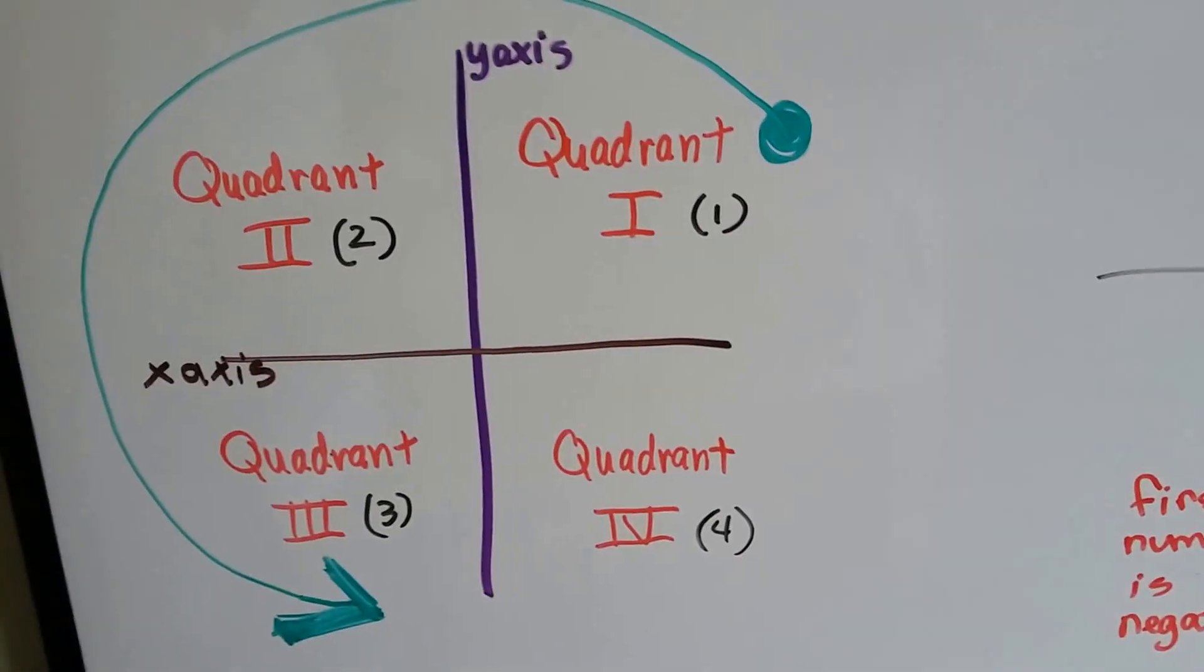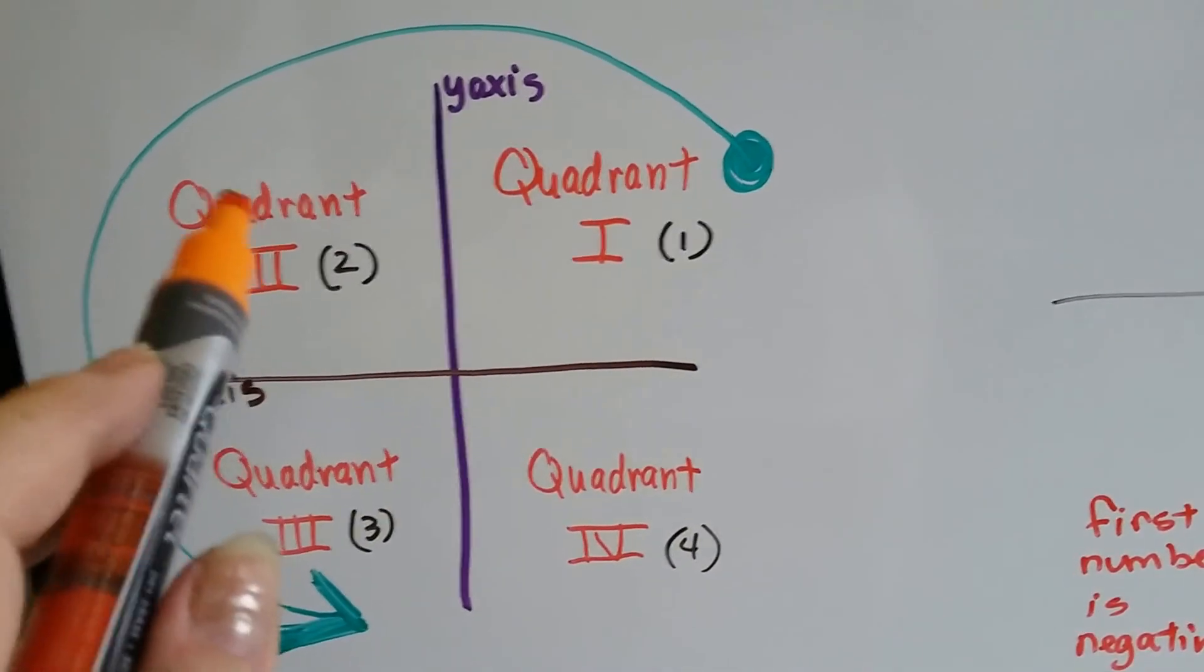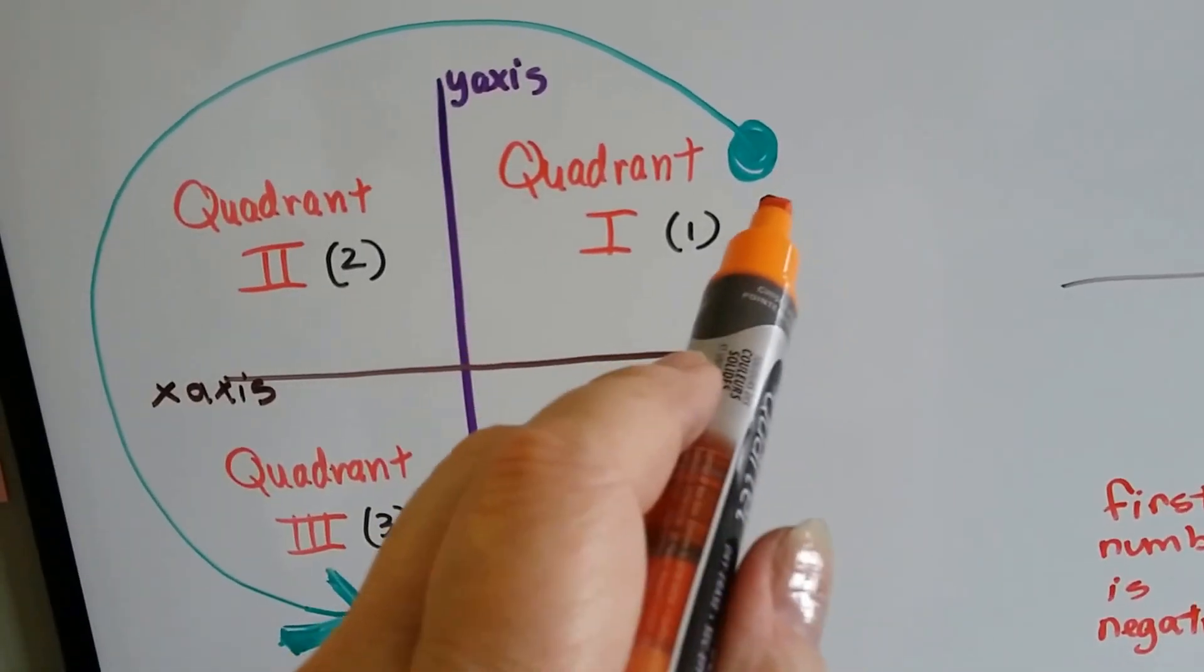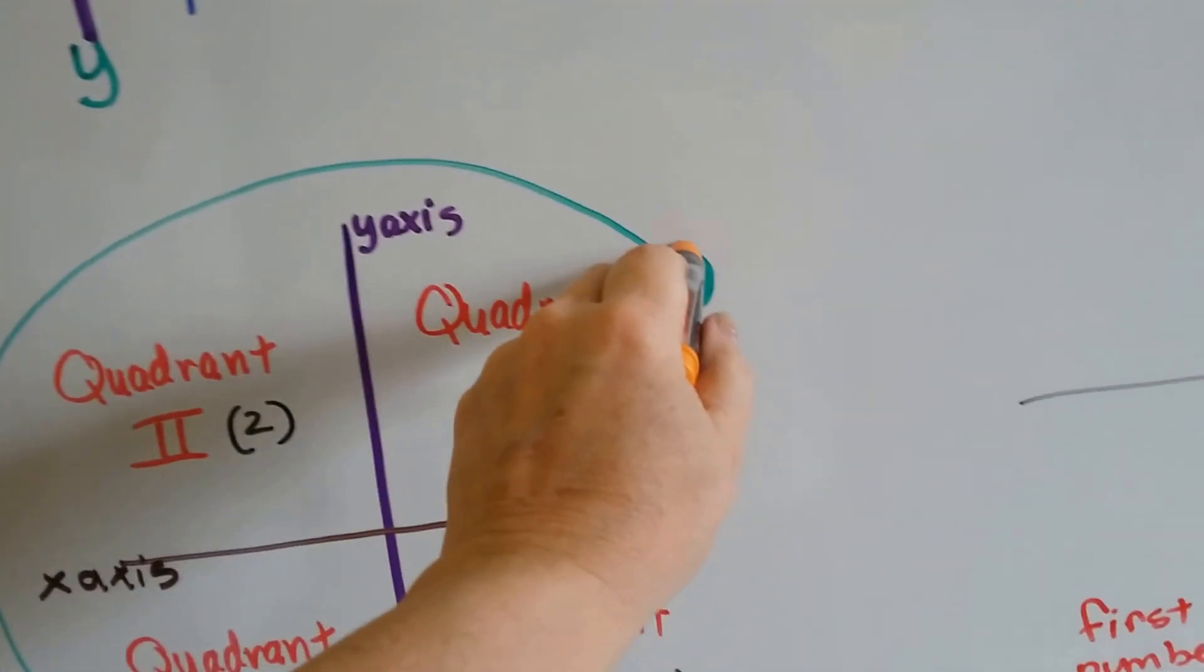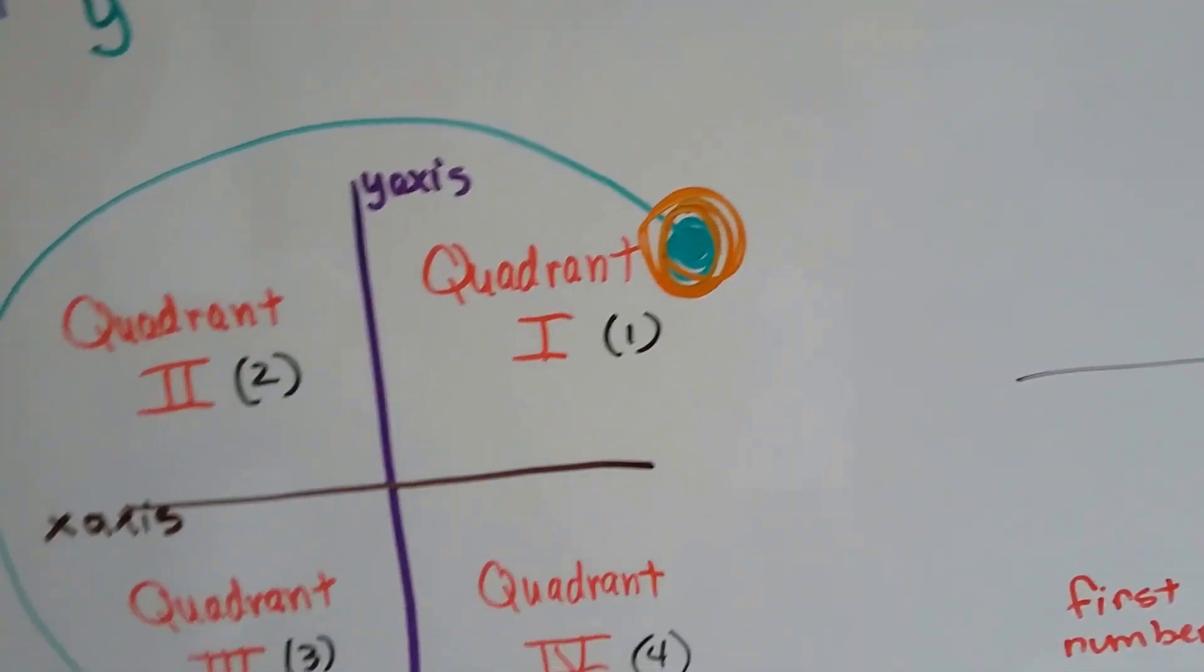Well, there's four quadrants to the coordinate plane. And you would think that it would start here, but it doesn't. It starts over here. So I want you to remember this big ball here. I want you to remember that big, huge, ugly, green and orange ball.